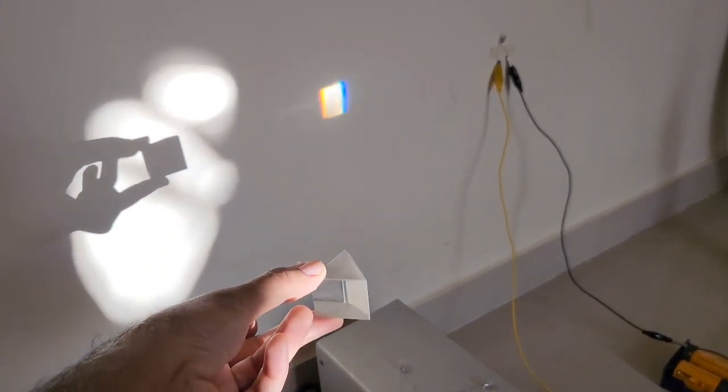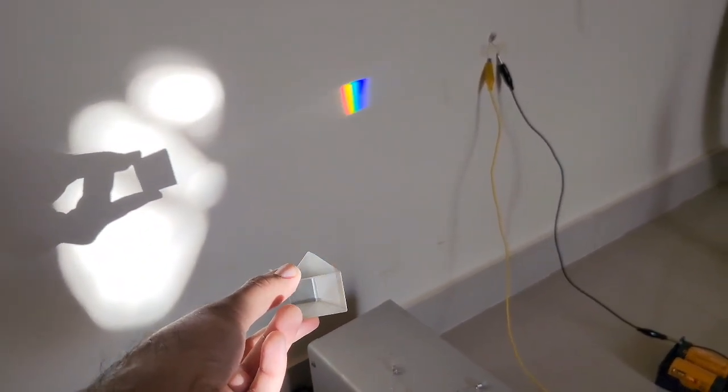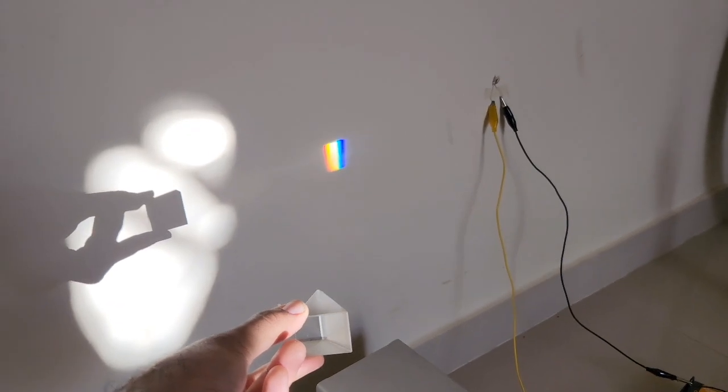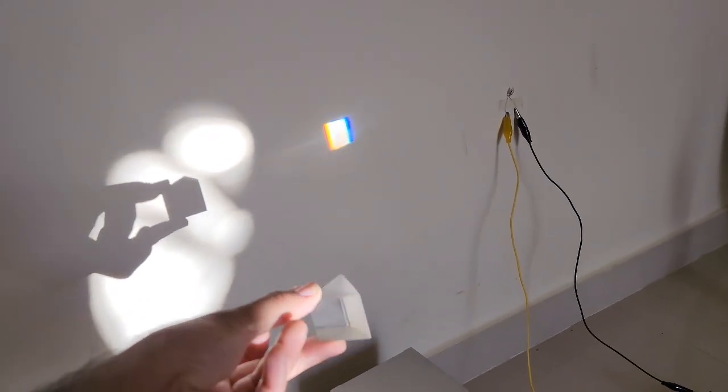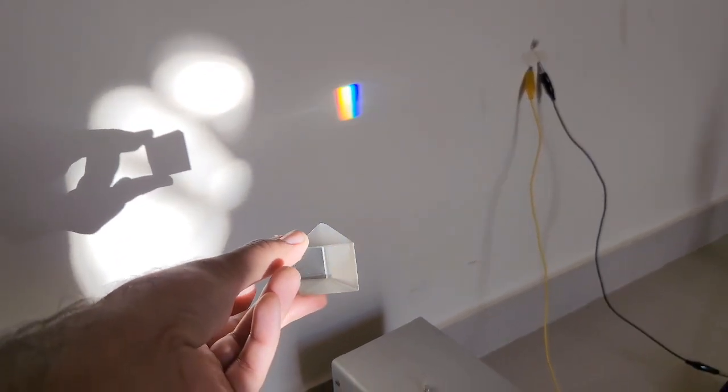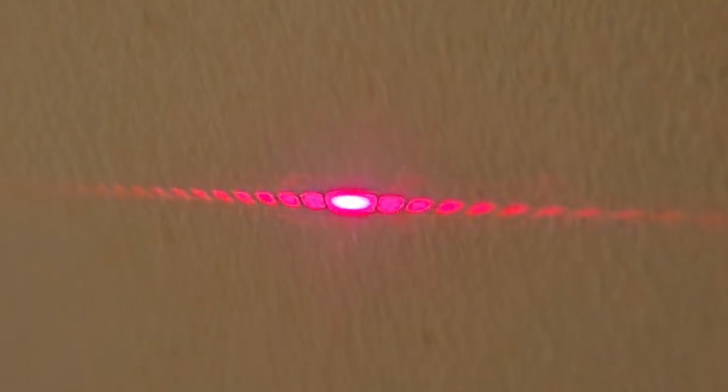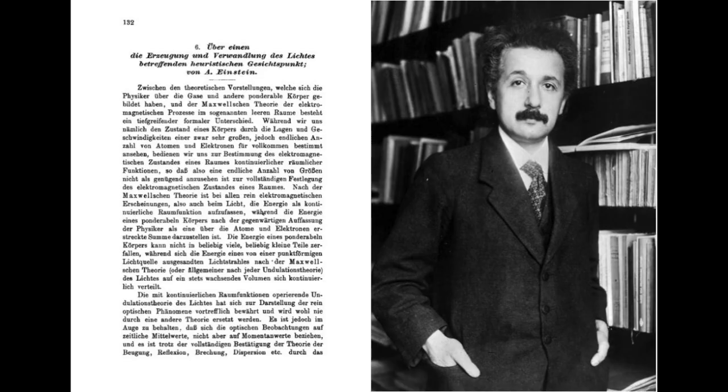One of the most significant discoveries in physics is that light exhibits both particle and wave-like behavior. Heinrich Hertz first observed a phenomenon that demonstrated the particle nature of light, known as the photoelectric effect. Albert Einstein later explained this effect in a groundbreaking theory that earned him the Nobel Prize and laid the foundation for quantum physics.